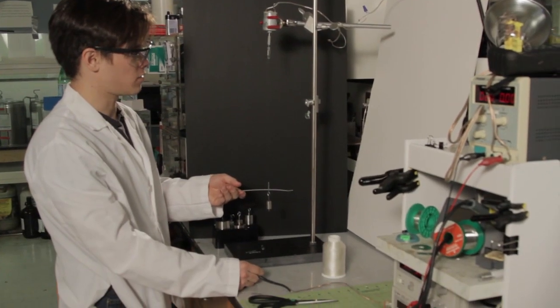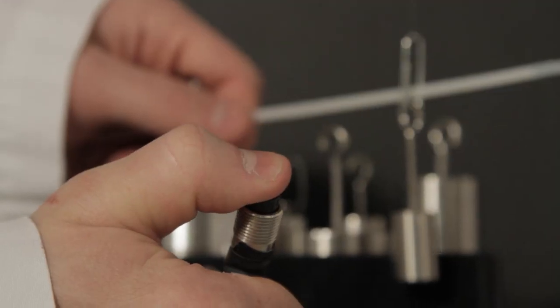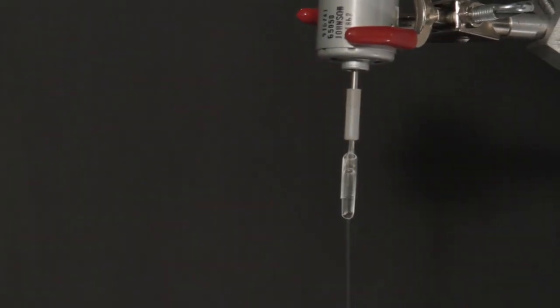What I can do now is just put something here to keep it from untwisting and turn the motor on. And as I do that, the motor is going to insert twist into the fiber.